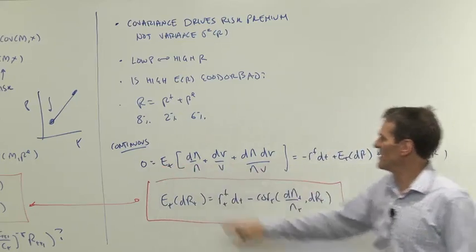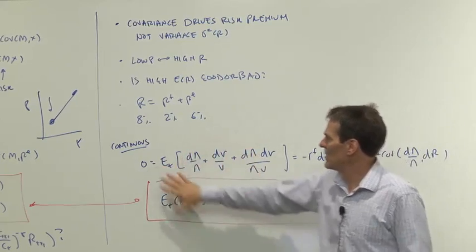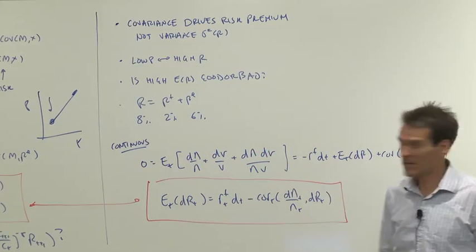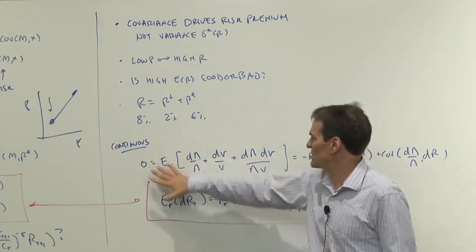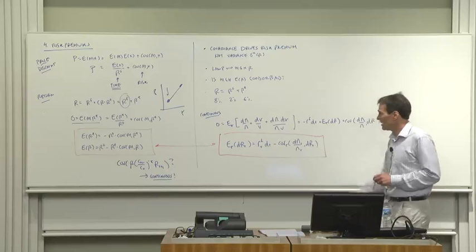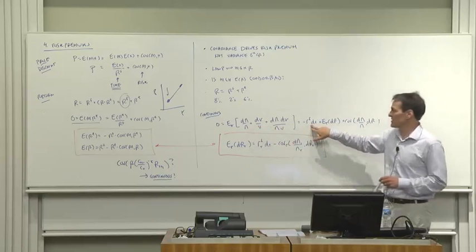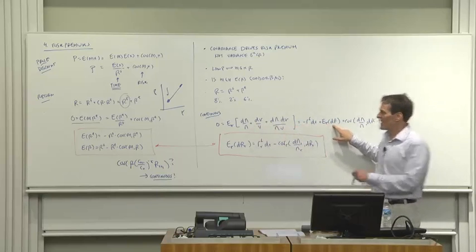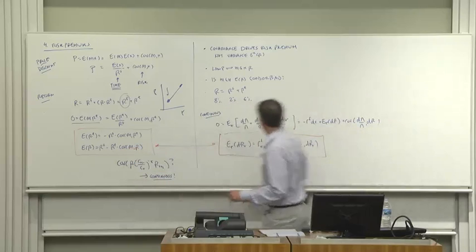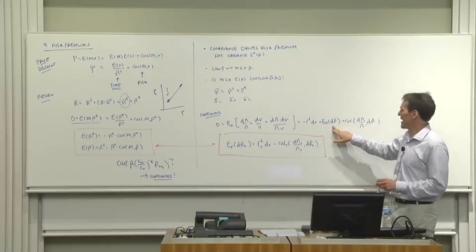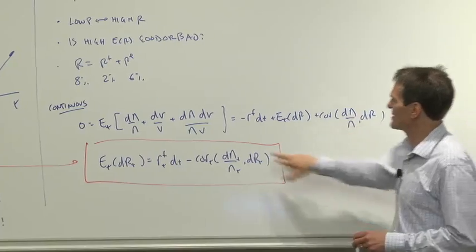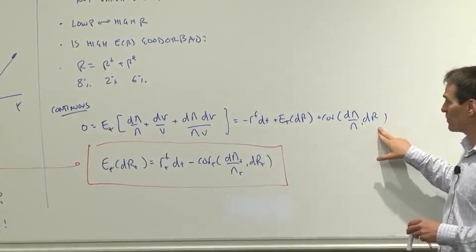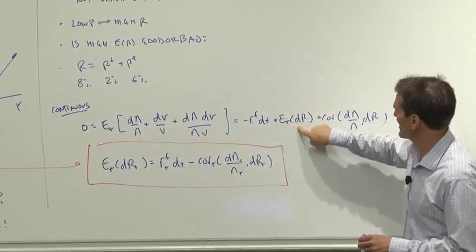Now, to continuous time. Going back to our continuous time formula E of dλ·dV, we break that out by Itô's lemma into dλ, dV, and the cross product. We know what to do with each of the three terms: E of dλ over λ is the risk-free rate term, E of dV over V is the expected return, and the remaining term is the covariance of discount factor growth with return.